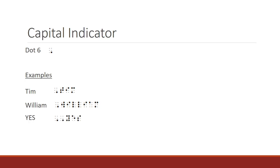To show that an entire word is capitalized, like the word YES shown here, you would use two capital indicators before the word. You do not put a space between the indicator and the letters. The space after the word cancels the effects of the indicator.